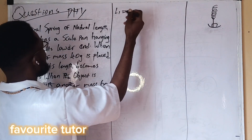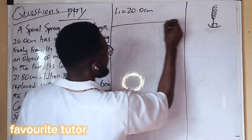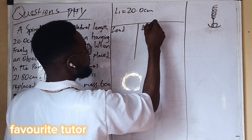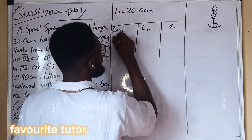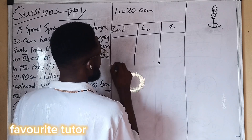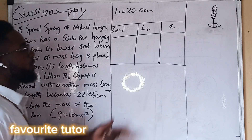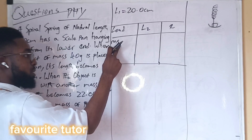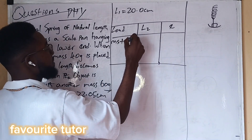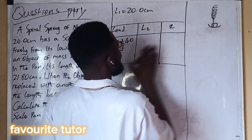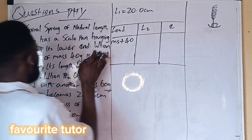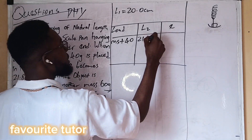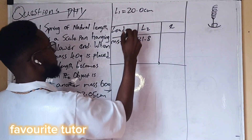Let me bring out a table. We have the original length of the spring as 20.0 centimeters. The table has columns for: load, new length, and extension. The load on the spring is the mass of the scale pan — let's call it Ms — plus the first load of 40 grams. The new length for the first case is 21.8 centimeters.